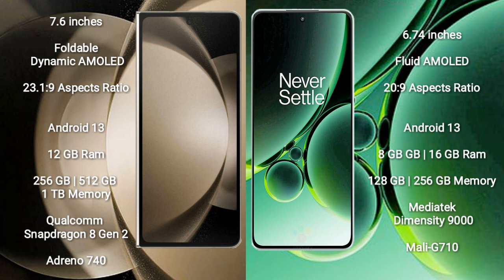Samsung Galaxy Z Fold 5 runs on the Android 13 operating system. OnePlus Nord 3 also runs on Android 13. Samsung Galaxy Z Fold 5 comes with 12GB RAM and 256GB or 512GB internal storage, powered by a Qualcomm Snapdragon 8 Gen 2 processor with Adreno 740 GPU.